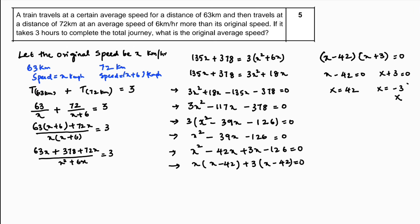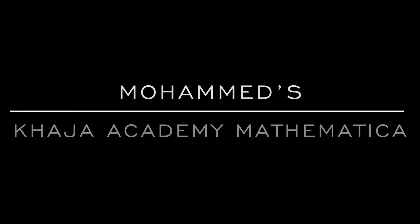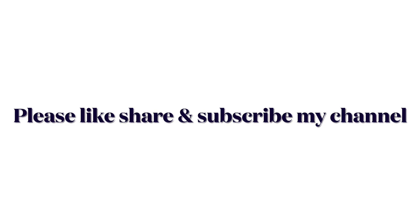Since speed cannot be negative, x = -3 is not possible. Therefore, the original speed is 42 kilometers per hour.